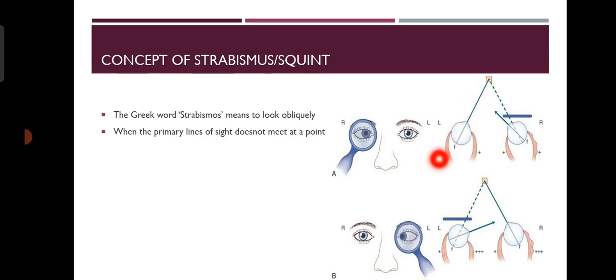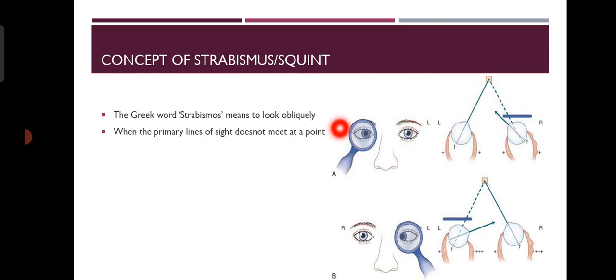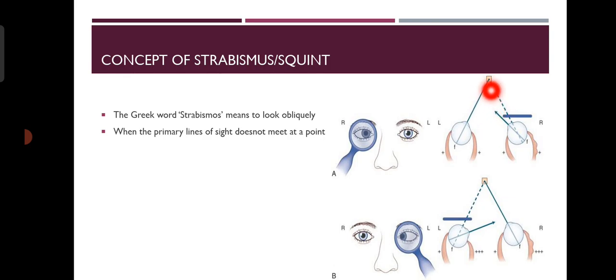In case of strabismus, the primary lines of sight do not meet at a point. The right eye and left eye primary lines of sight are not meeting. Because as you can see in this image, the right eye is deviated towards the nasal side, so this primary line of sight has deviated and is not meeting the fixation point. That's the reason there is double vision. This condition is called strabismus or squint when the two primary lines of sight do not meet at the object point.